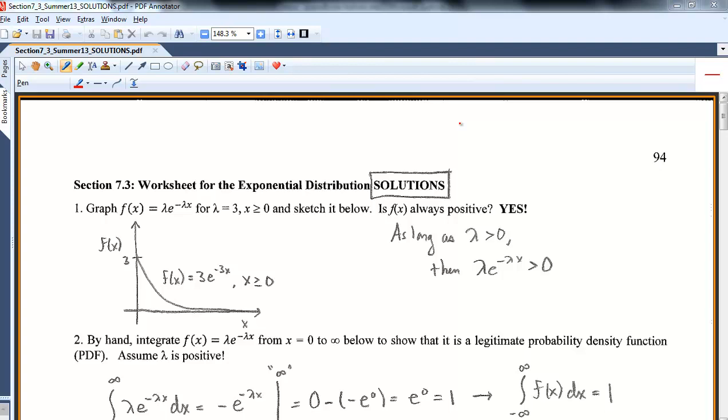We are in 7.3. In 7.1, we looked at the uniform distribution, probably the easiest of the continuous distributions. It was just a nice line from A to B, whose area under the curve was 1. It's easy to integrate. You wouldn't even have to. You could just look at areas under rectangles.